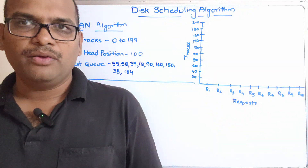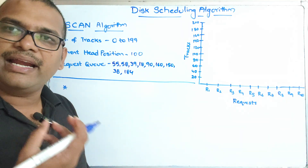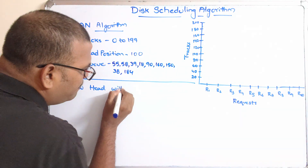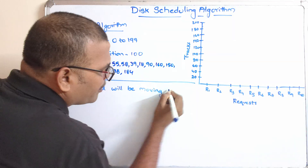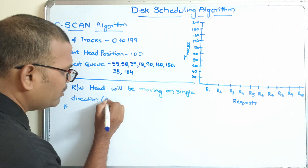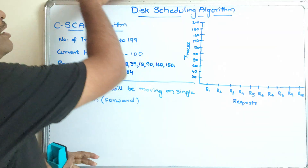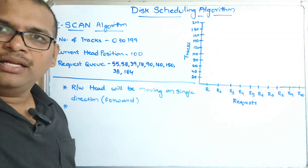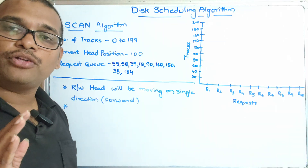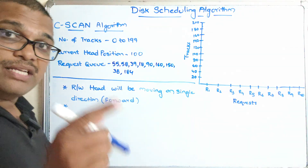The working of C-scan is similar to the scan algorithm with a little bit of difference. Similar to scan, the read-write head will keep on moving in a single direction, usually the forward direction. Whenever it reaches the maximum track number, it will come back to the lowest track number, which is zero, directly. And again, it will start processing requests in a single direction. During the backward movement, it doesn't process any request. That is the difference between C-scan and the scan algorithm.